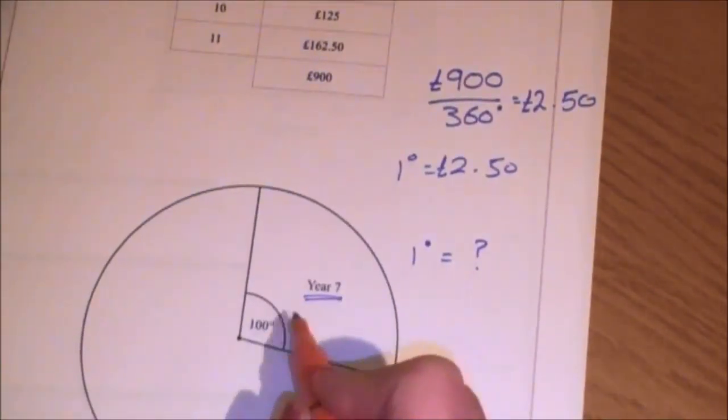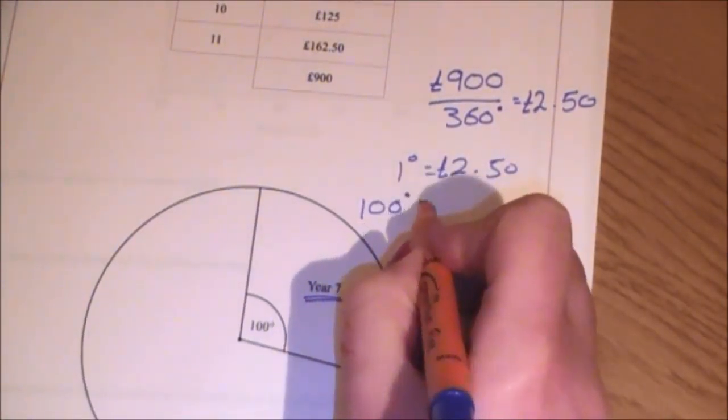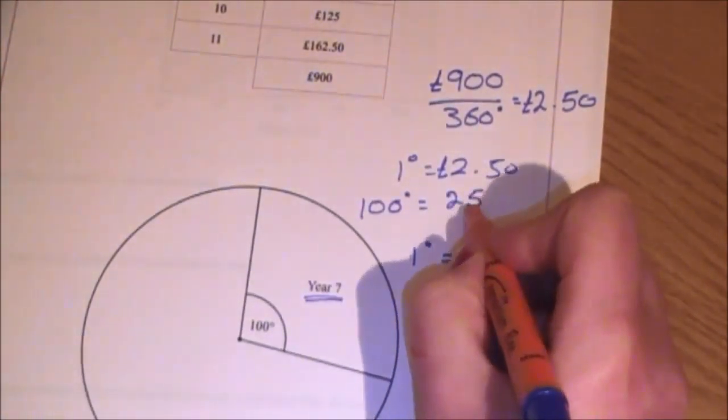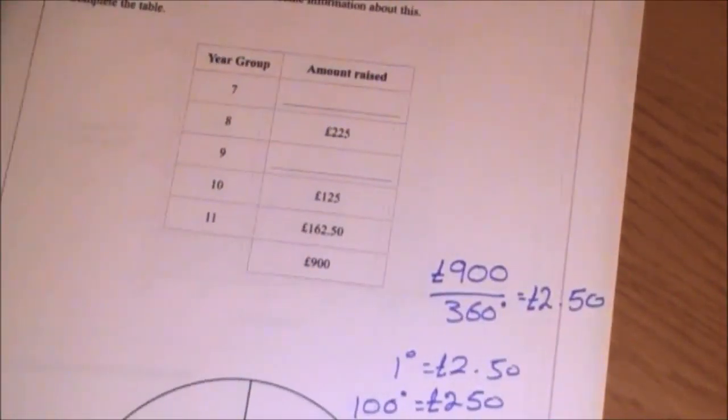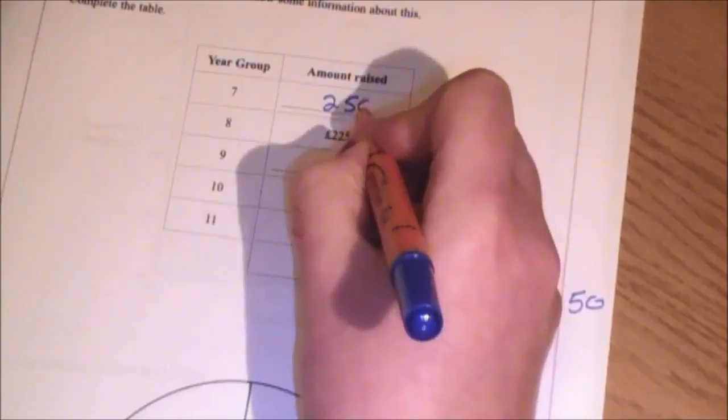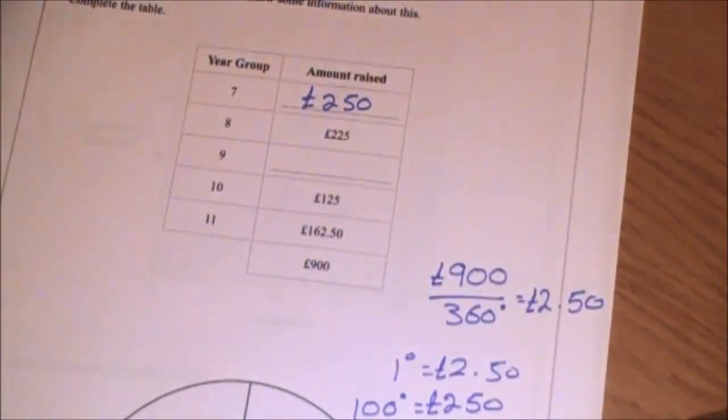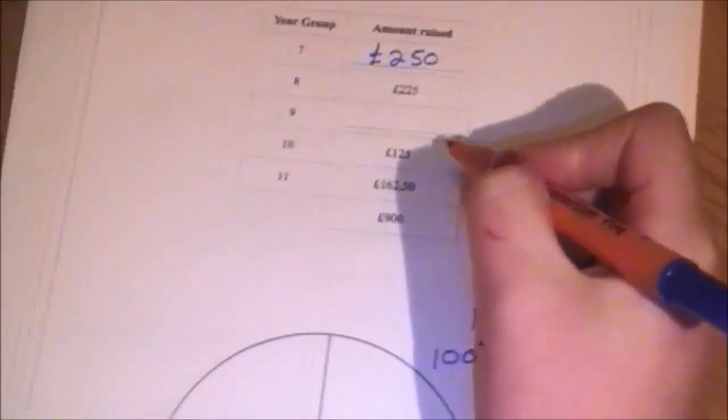Now, here I've actually got 100 degrees, so that's actually £250. So year 7 raised £250. Now I only have one missing.